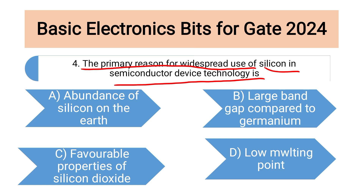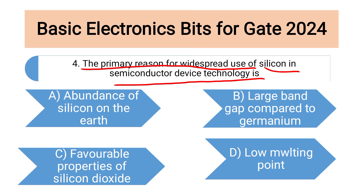All options may seem correct but we need to find the main reason. Regarding option B, we already discussed that silicon has a band gap of 1.1 eV and germanium has 0.7 eV — that is correct but not the main reason. The main reason is that silicon is more available on the earth's surface than all other substances. That is why we mostly prefer silicon for making semiconductors. So the answer is the first option: abundance of silicon on the earth.